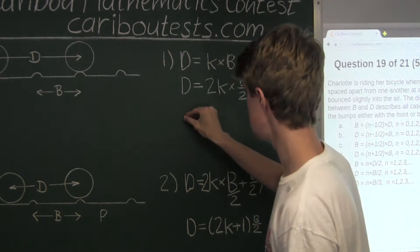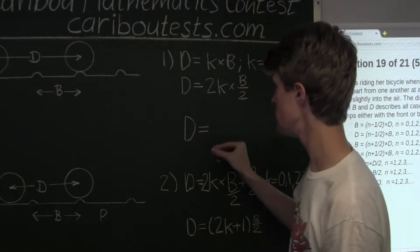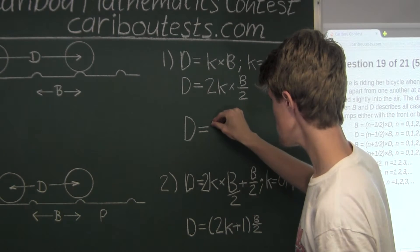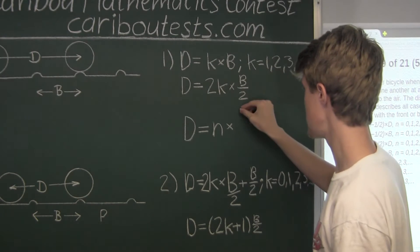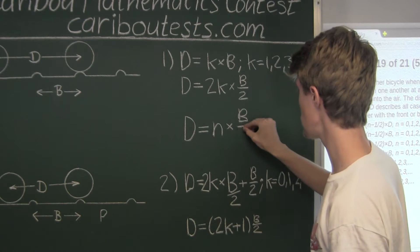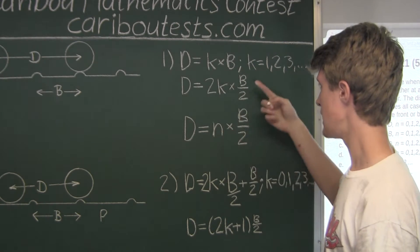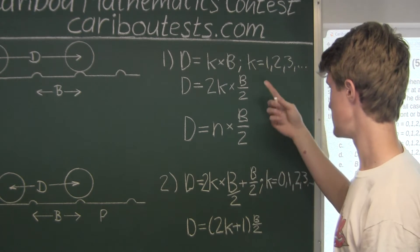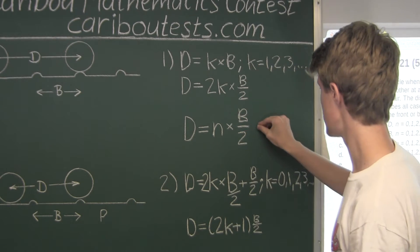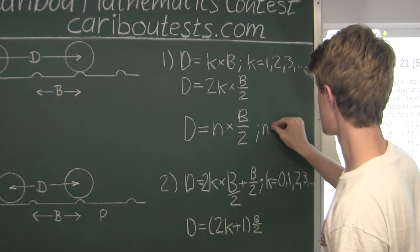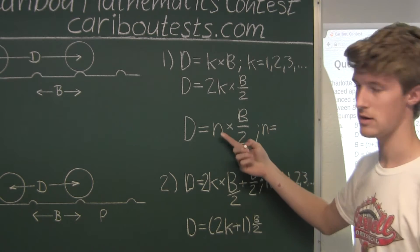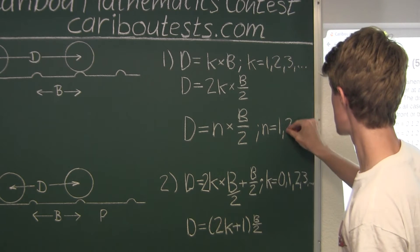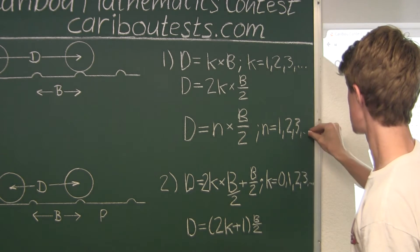So now we just want one formula that combines the even and odd multiples of B over 2. Well, this is easy, because we can just have D equals N times (B over 2), where N can be any positive integer — 1, 2, 3, and so on — covering all odd and even multiples of B over 2.